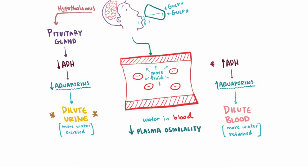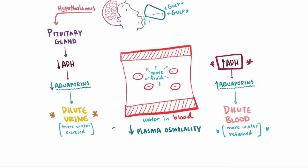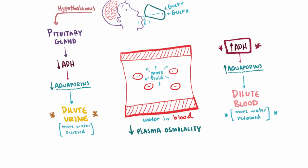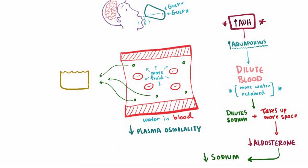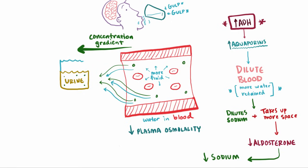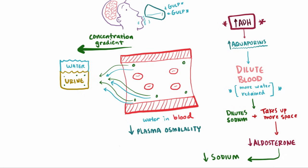Now suppose ADH continues to be released even though my plasma osmolality has dropped. We're going to continue retaining water, and as we drink more and more water, we might expect our plasma osmolality to continue dropping. However, this isn't really what happens. As more water is retained, it dilutes the other solutes floating around in our blood, like sodium. The extra fluid also takes up more space in our blood vessels, which triggers another mechanism that causes the hormone aldosterone to stop being released. Less aldosterone causes the body to start dumping sodium from the blood into the urine. Concentration gradients cause water to follow sodium, so we end up with excess water being excreted in the urine with the sodium, which normalizes the fluid volume in the blood.